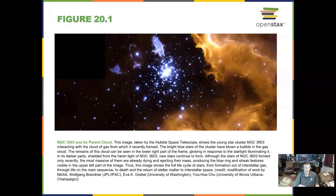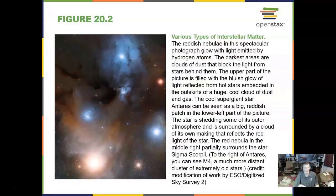Here is a gas cloud taken by the Hubble Space Telescope. There are some hot blue stars right there in the middle. Very beautiful picture. We have different types of interstellar matter — stuff that is in between the stars and planets. We have different gas clouds, nebulae, that are out there.